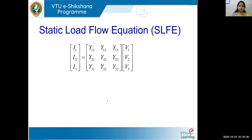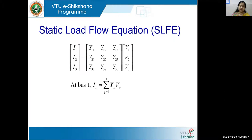To derive the static load flow equation, we already know the relationship I = Y·V. Taking a matrix for a three-bus system, we have the injected bus currents, the bus voltages, and the driving point and transfer admittances — that is, the Y-BUS. To write this matrix in equation form, we take bus one first. For bus one, it is the first row of Y-BUS multiplied by the bus voltage column: I₁ = Y₁₁V₁ + Y₁₂V₂ + Y₁₃V₃, which we can write as I₁ = Σ(Q=1 to 3) Y₁Q·VQ.